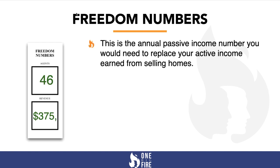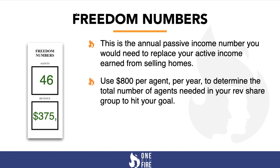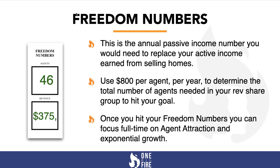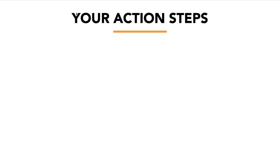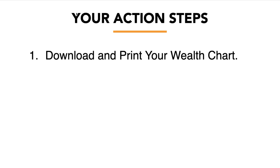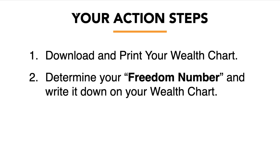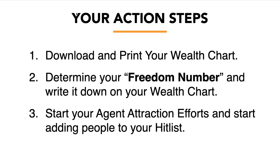Your freedom number is the annual passive income amount you would need to replace your active income earned from selling homes. Use $800 per agent per year to determine the total number of agents needed in your revenue share group to hit your goal. Once you've hit your freedom number, you can focus full time on agent attraction and exponential growth. Your action steps: download and print your wealth chart, determine your freedom number, write it on your wealth chart, and start your agent attraction efforts by adding people to your hit list.